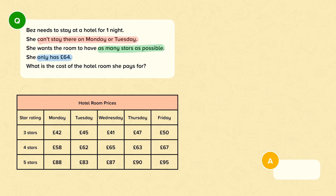The first bit of information is that she can't stay there on Monday or Tuesday. So we're going to eliminate every option that's on Monday or Tuesday because she can't stay there on those days. The next bit of information is that she only has £64, which means she cannot afford anything that is £65 or more. So we're going to eliminate everything that's left that is £65 or more.